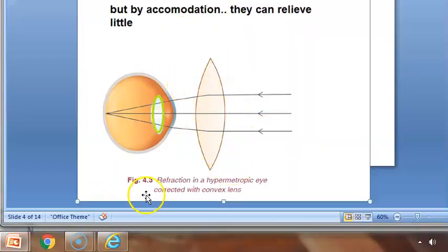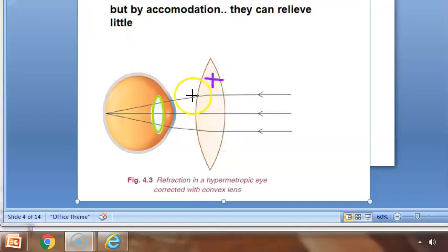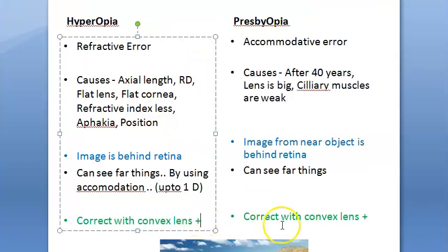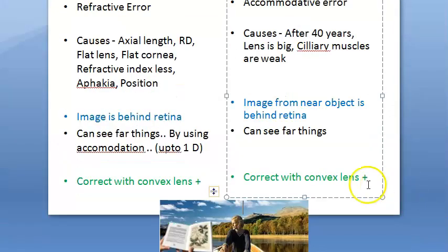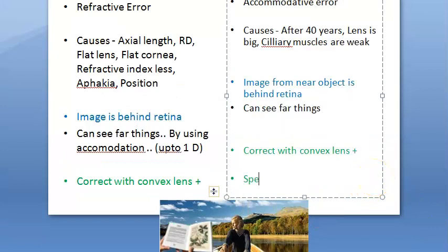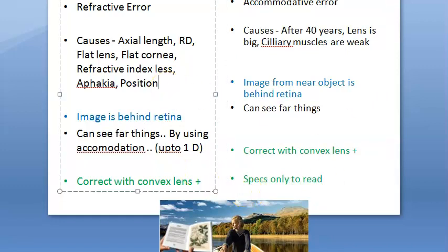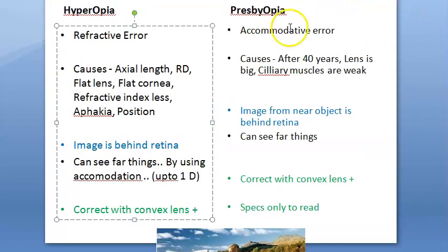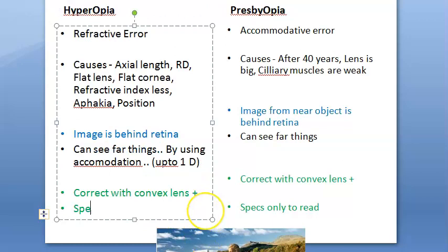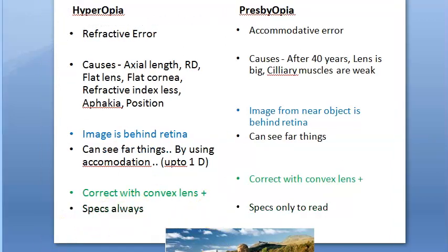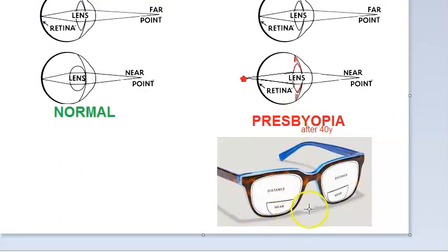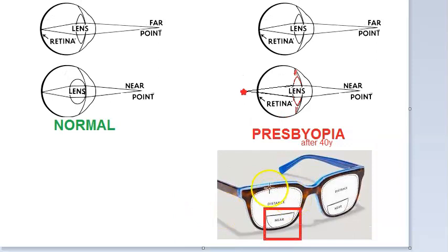A convex lens with positive power will converge the rays, bending them more so they converge right onto the retina. Now, the presbyopic patient needs to wear specs only to read. What about the hyperopia patient? The hyperopia patient may need to wear specs at all times. For a presbyopic patient, bifocal specs are given — only the lower portion has near-vision power, while the upper portion for distance vision has plain glass, or any needed distance correction.